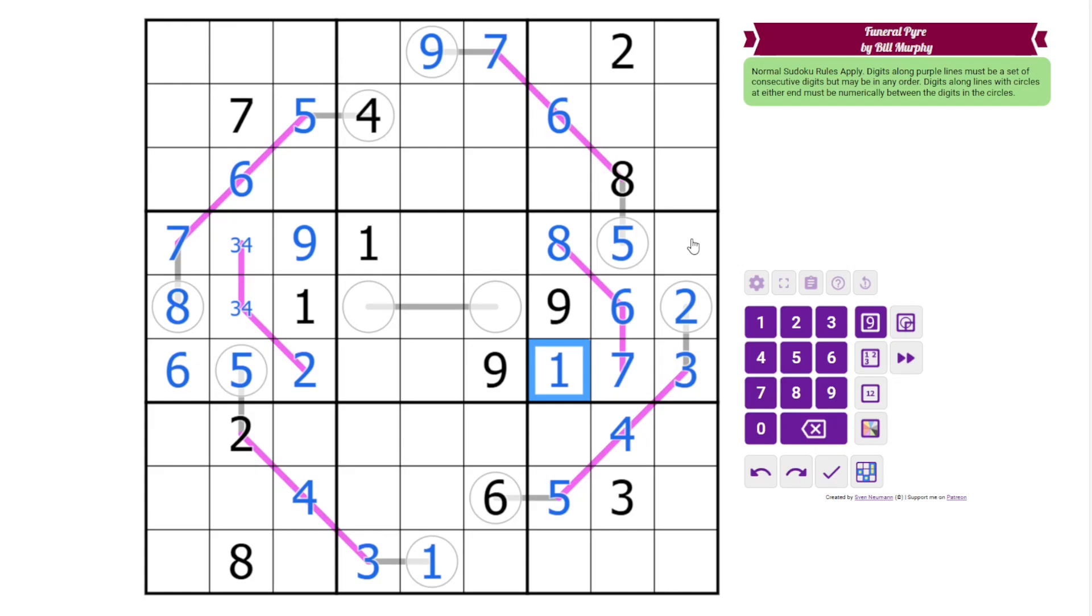Now one has to go here, and that places four here, which resolves three and four. Now this line, we only have three digits, and so the middle digit has to go in the middle of the line, and then three and seven are resolved by these digits. And that is all the clues.